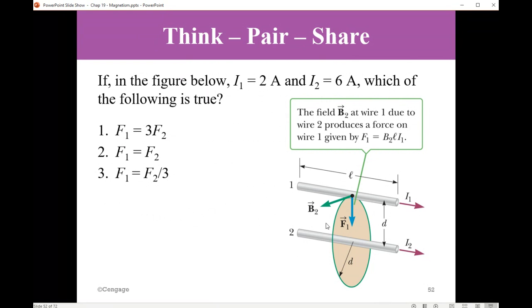If in the figure below I1 is 2 amperes and I2 is 6 amperes, which of the following is true? The two currents are parallel, so the force will be a force of attraction. The options are: F1 is 3F2, F1 is F2, or F1 is 1/3 F2. From Newton's third law, you are dealing with an action-reaction pair of forces. So the correct answer is F1 equals F2. The action of 1 on 2 is the same as the action of 2 on 1.